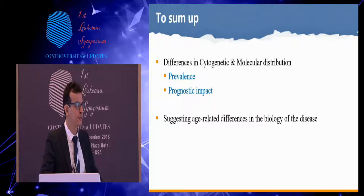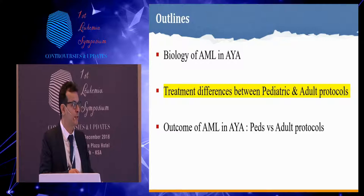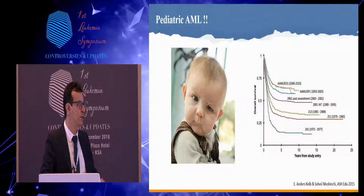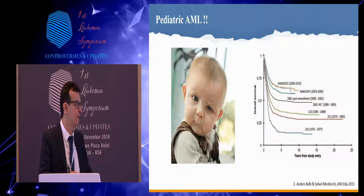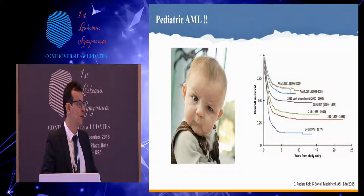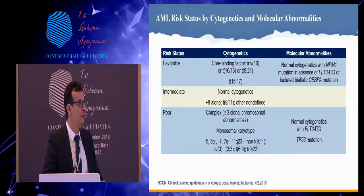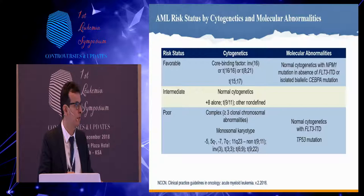Moving to treatment differences between adult and pediatric approaches, let's start with the success achieved in pediatric AML. Through different study groups, reaching the recent COG study AAML0531, overall survival is up to 70 to 72%. This has also been achieved in the UK through the MRC trials 10, 12, and 15, approaching 72%. Diagnosis and risk stratification are performed in a very similar fashion to adults, mainly using cytogenetics and molecular findings.